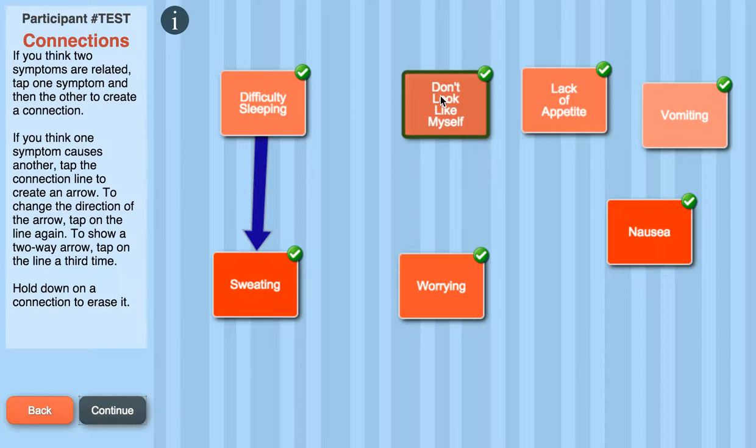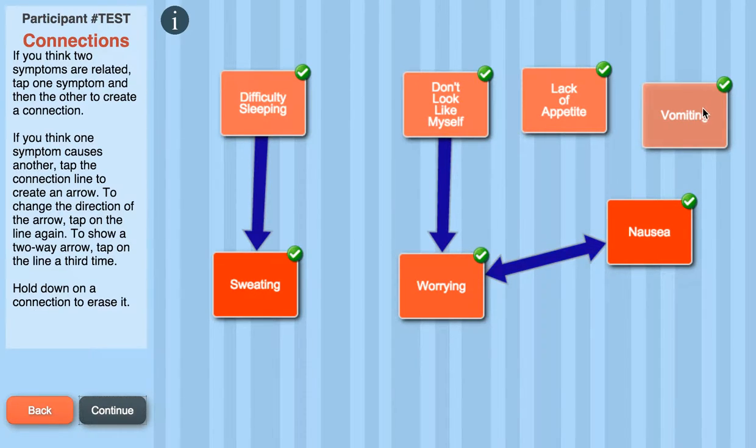I also believe that my not looking like myself and my worrying are related, and the worrying is also caused by me not looking like myself. So, again, I'll create another arrow. My worrying and my nausea are also related, and I think that they cause each other.